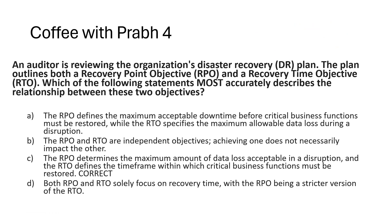An auditor is reviewing the organization's disaster recovery plan. The plan outlines both RPO and RTO. Which of the following statements most accurately describes the relationship between these two objectives? Many people get confused with RPO and RTO. RPO always deals with data backup, while RTO talks about the time it takes to restore services.